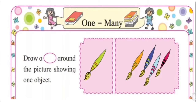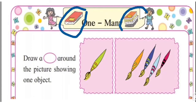Dear students, open your textbook. We will do some examples from your textbook. Look at this picture — how many books are here? One book. And here — many books. One book — many books. Very good!